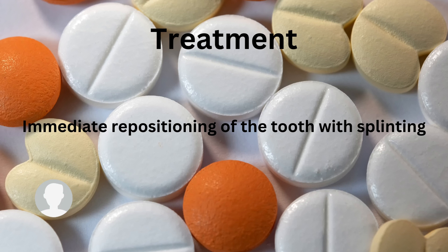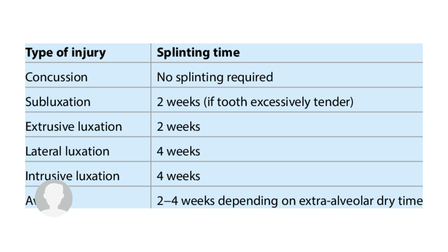The splinting time required depends on the type of injury. Previously I discussed concussion and subluxation: in concussion the tooth is not mobile, so no splinting is required, but for subluxation the tooth is mobile so two weeks of splinting is needed — the same as for extrusive luxation. For lateral and intrusive luxation, because crushing of the alveolar bone occurs, more healing time is needed: four weeks of splinting.